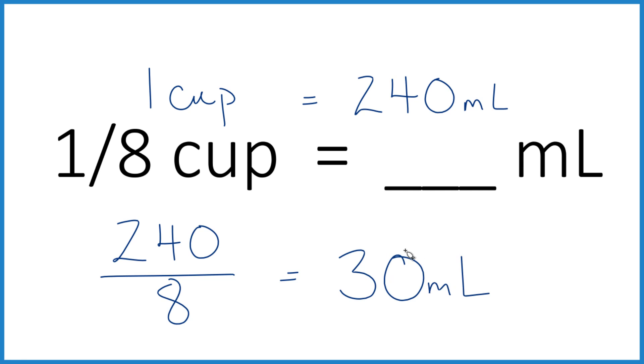So if you have 1 eighth of a cup, you have 30 milliliters. The exact value is a little bit less, but this is what's used in baking.